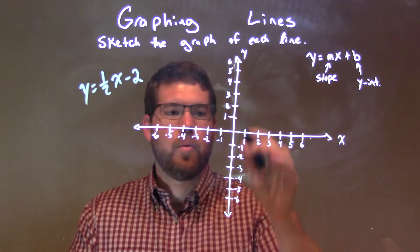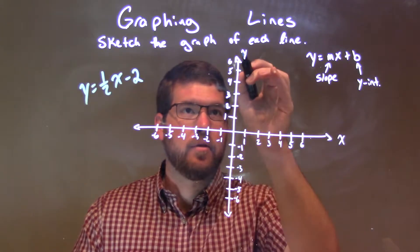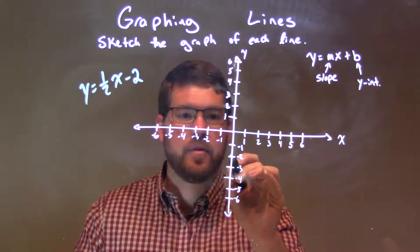Well, minus two is our y-intercept, so that's where it crosses the y-axis. So look at the y-axis, got negative two right there, put a point.